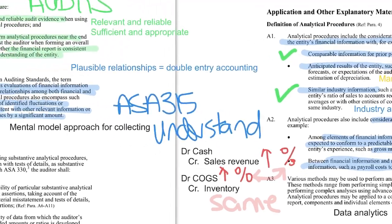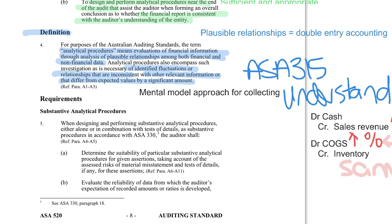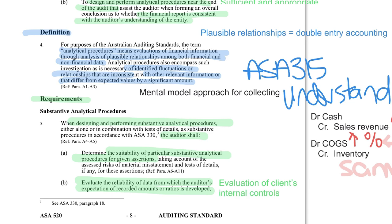Moving to the requirements — the legally enforceable components — when I design and perform substantive analytics, I have to determine that the particular procedure matches the assertion, that I've considered risk, and that I evaluate the reliability of the data I'm developing this on. This links back to my evaluation of the client's internal controls, because most times when doing analytical procedures I'm using data from inside the client — so if their internal controls are poor, I might not be able to rely on substantive analytical procedures to the same extent.